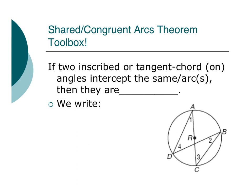So let's write this theorem down. If two inscribed or tangent chord on angles—remember those are the ones we're going to refer to them as on angles in class because this is a mouthful to say every time—so on angles, an angle that has its vertex on the circle. They intercept the same arcs, then they are congruent. Very important. Now remember, it's not just any angle, it's only the on angles. So the vertex has to be on the circle somewhere around here.